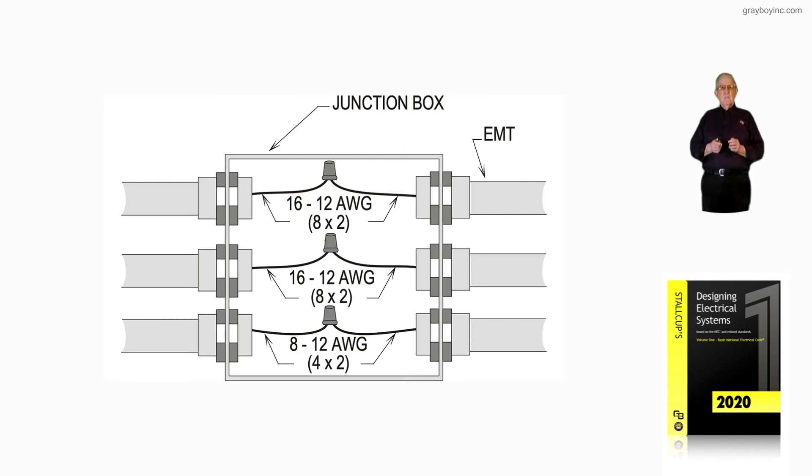Based upon what we have in this junction box, it's EMT with EMT connectors, and notice we have sixteen 12 AWG conductors. So there's two conductors there, one coming from the left, one from the right. So we'd have two times eight, and that would give us 16.